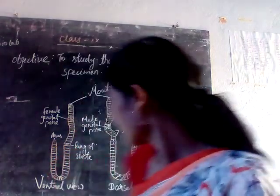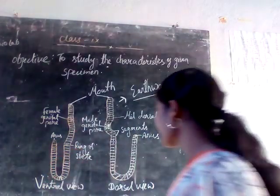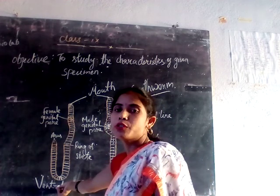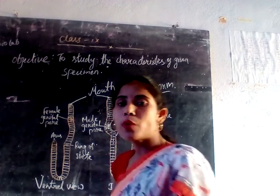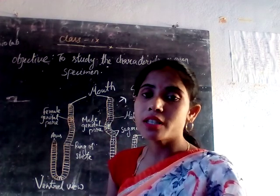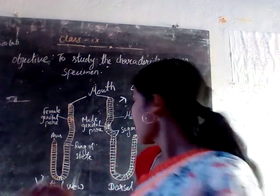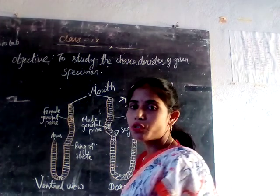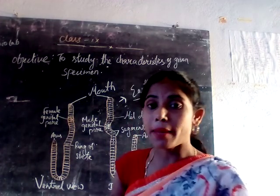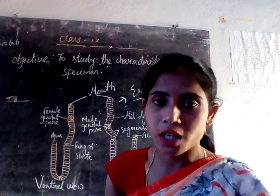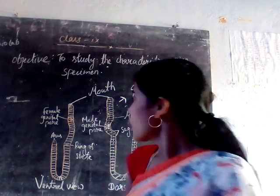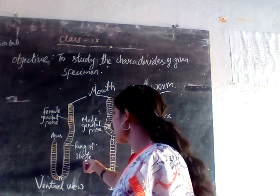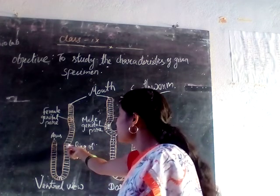Here we are seeing the ventral view — ventral view means we are seeing the front view of the earthworm. And the second one is the dorsal view — dorsal view means the back view of the earthworm. So in the front view of the earthworm we have the ring of state.